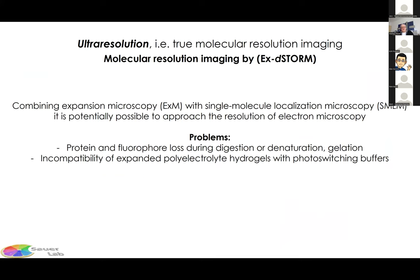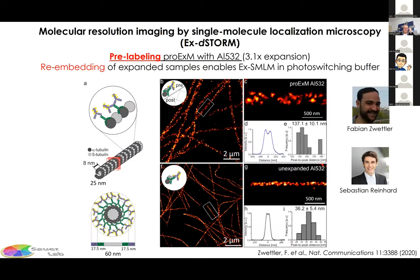Very powerful in combination with structured illumination microscopy, but can we achieve real molecular resolution? Intuitively, combining ExM with dSTORM seems straightforward. However, there are problems: fluorophores are destroyed during the gelation process, but we can use post-gelation labeling. More seriously, expanded negatively charged polyacrylamide gels shrink dramatically if you add salts — a photoswitching buffer containing PBS and 100 mM thiol causes the gel to shrink back to original size. The solution: re-embed the expanded gel in a neutral polyacrylamide gel after expansion.